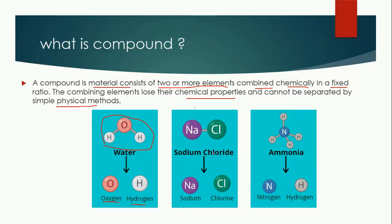Similarly, another example is sodium chloride, which is a salt. The combining elements sodium and chlorine — chlorine is a gas while sodium is a solid — so when they both combine they make a solid known as sodium chloride. Similarly, ammonia is formed when nitrogen and hydrogen are combined together.